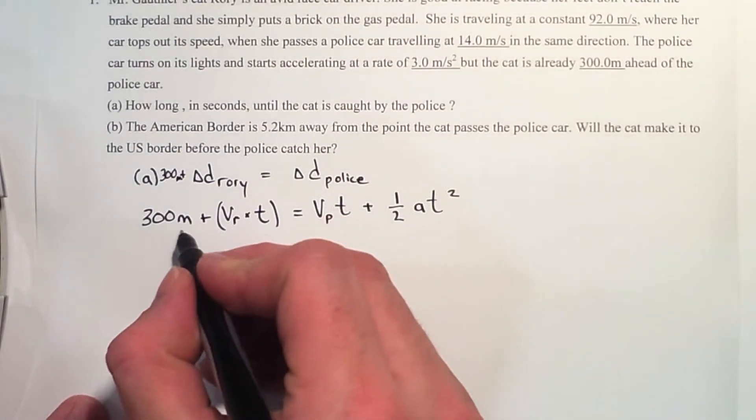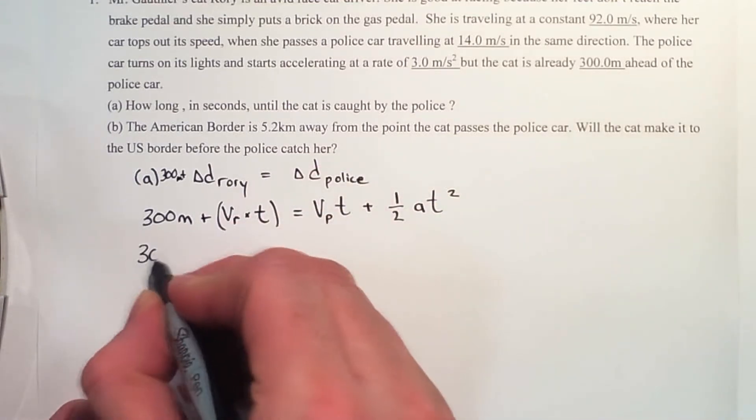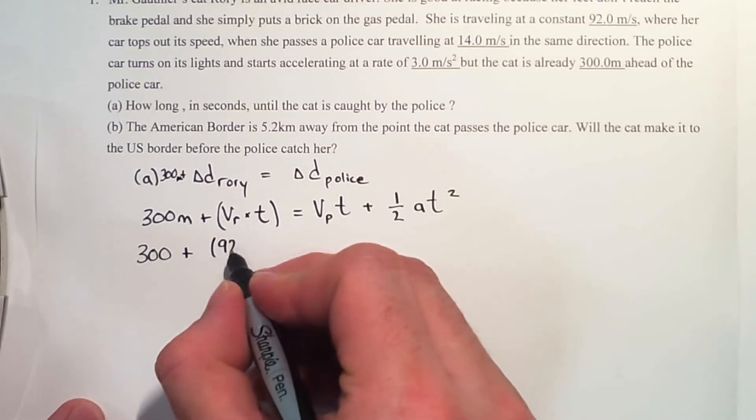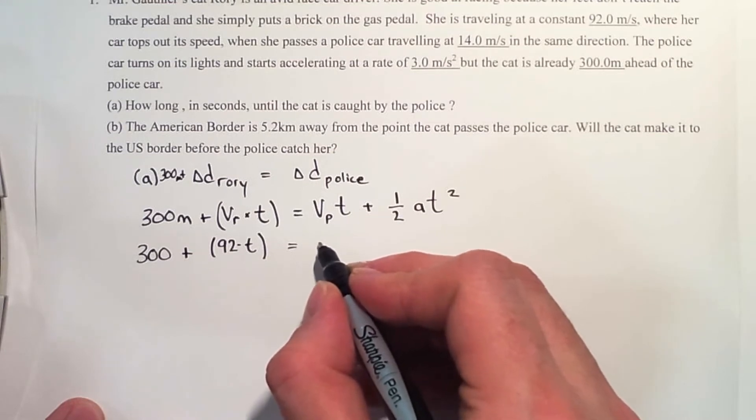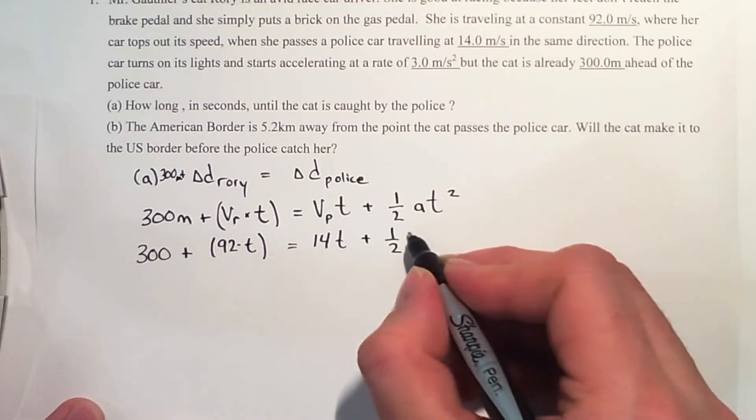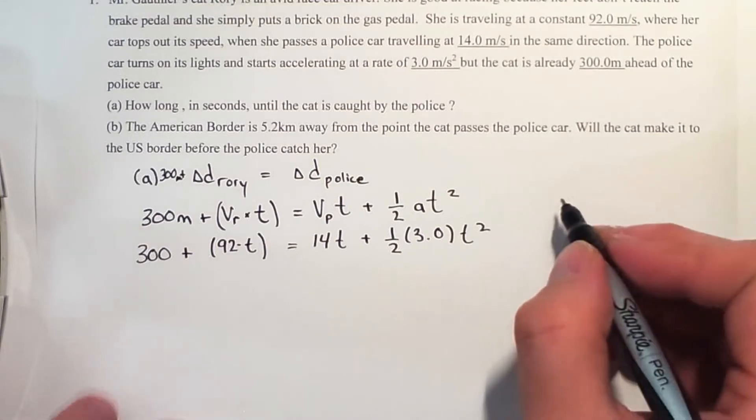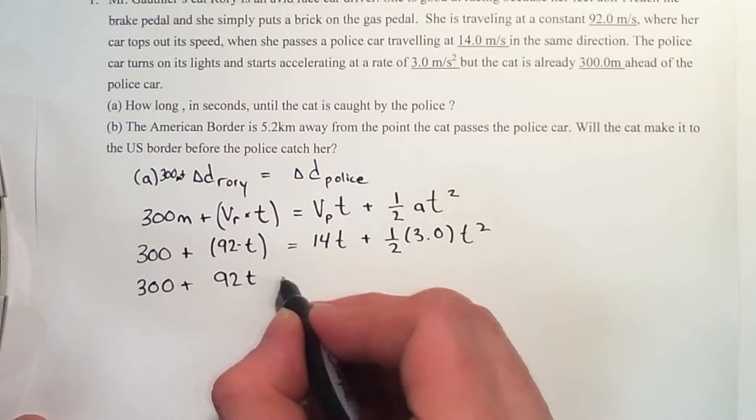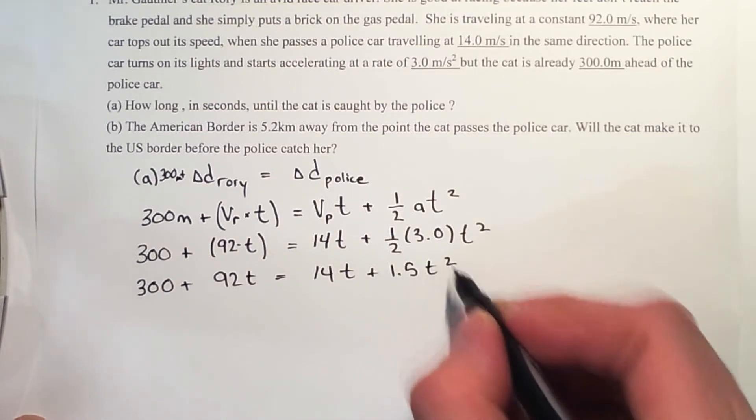So we can start subbing in some values. I'm going to ignore units, just it's going to get messy otherwise. So 300 plus 92t equals 14 meters per second t plus one-half 3 meters per second squared. 300 plus 92t equals 14t plus 1.5t squared.